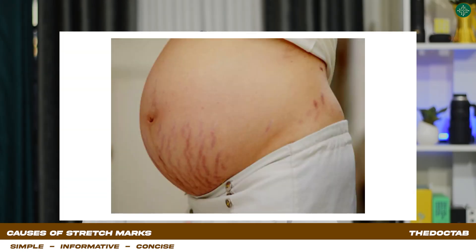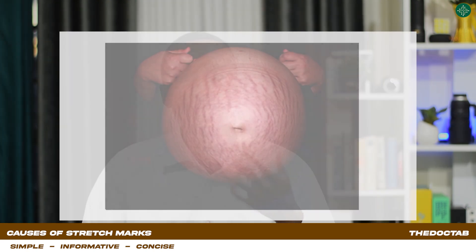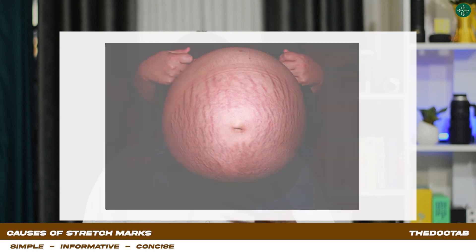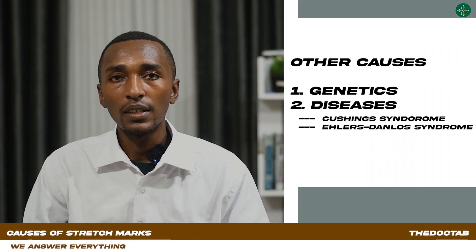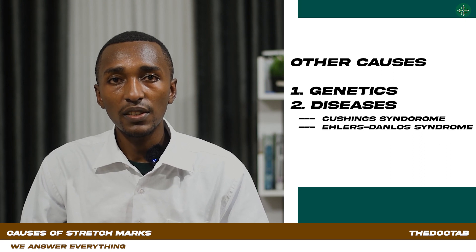The second cause is pregnancy, which is characterized by the stretching of the abdominal skin region by the developing fetus. This usually manifests as stria gravidarum. The third cause is genetics — surprisingly, if your parents and relatives had stretch marks, you're more likely to develop stretch marks. Lastly, stretch marks are also related to medical conditions such as Cushing's syndrome.